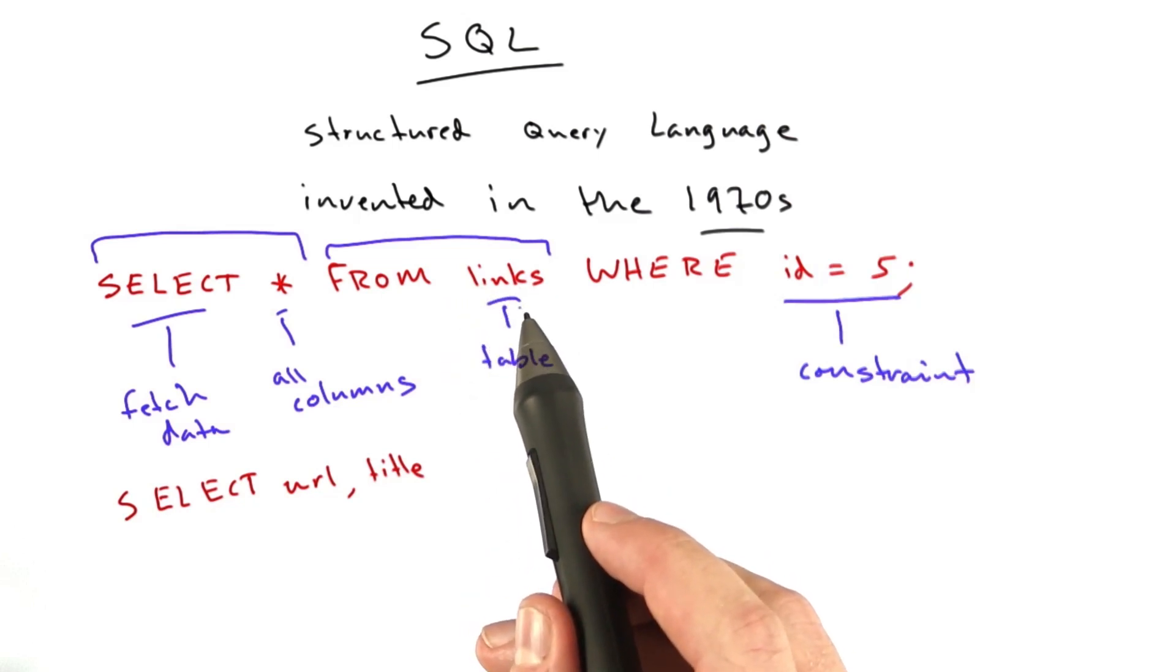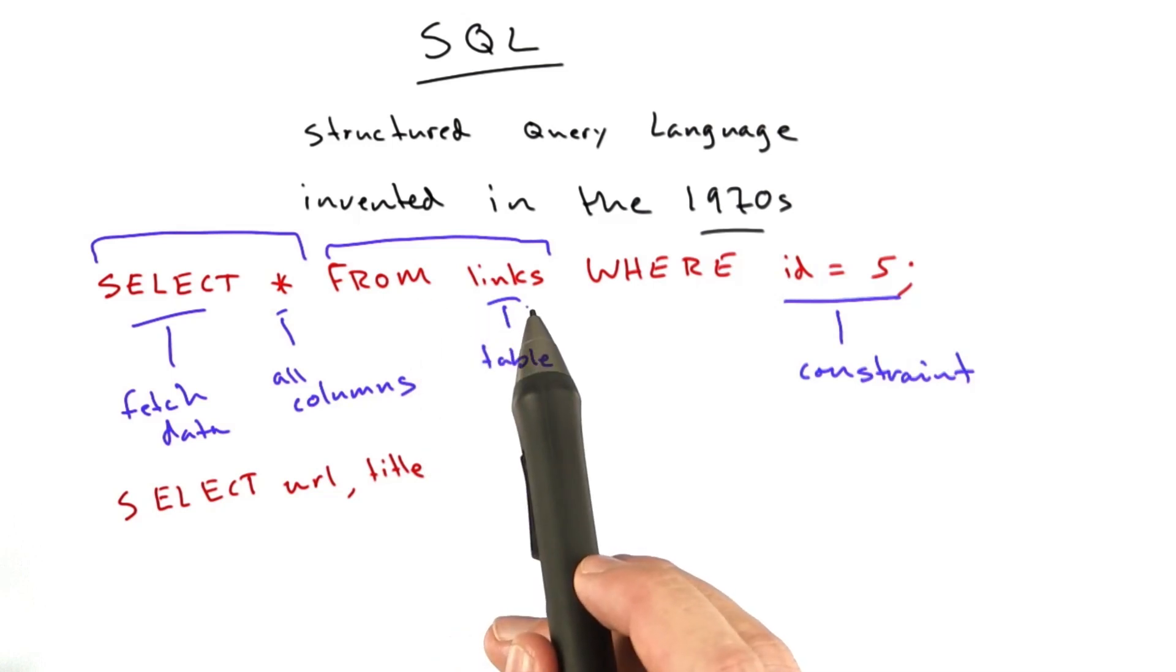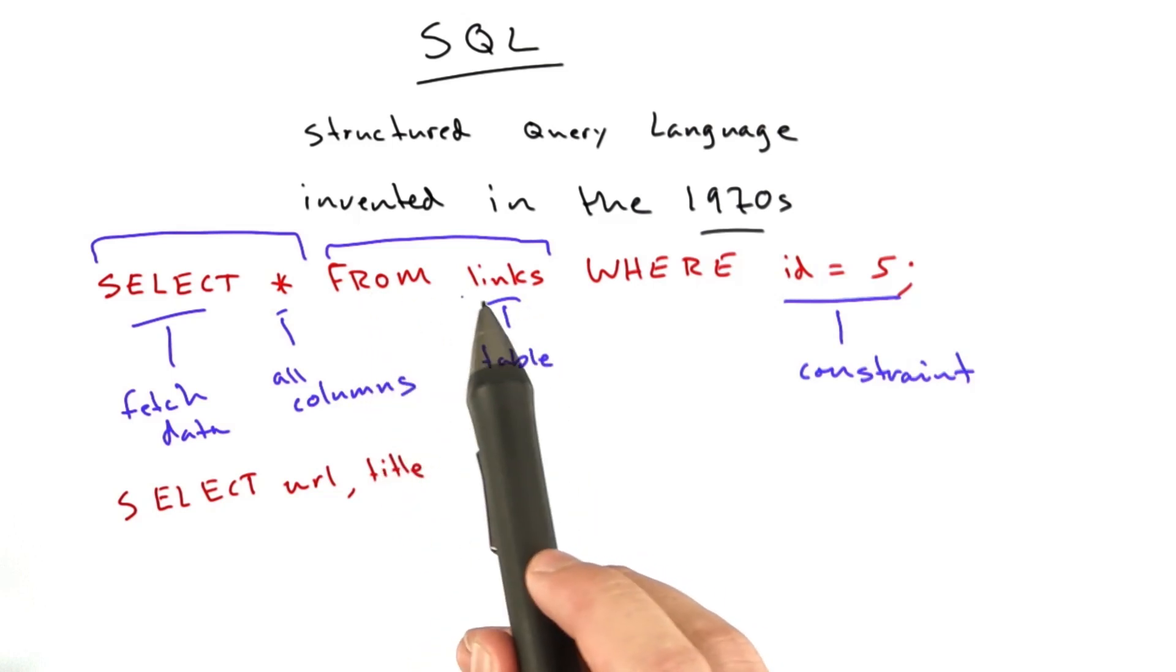But you can actually include any table if you're making, or multiple tables. And we'll talk briefly about what that means a little bit later. But for now, we're just going to be selecting from the links table. And that's the name of the table we made.